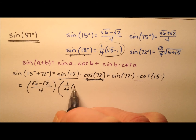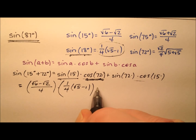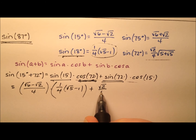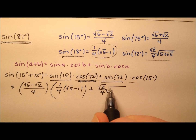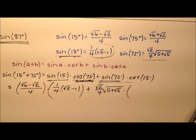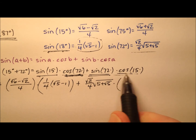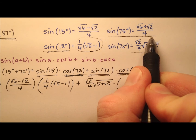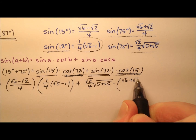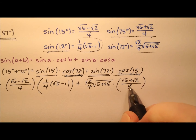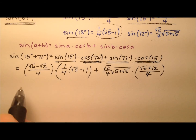That gives us one-fourth times the square root of 5 minus 1. Then the sine of 72 is the square root of 2 over 4 times a radical expression, and that is multiplied by the cosine of 15. By the same complementary relationship, the cosine of 15 equals the sine of 75 degrees, so we substitute in the square root of 6 plus the square root of 2, all over 4.